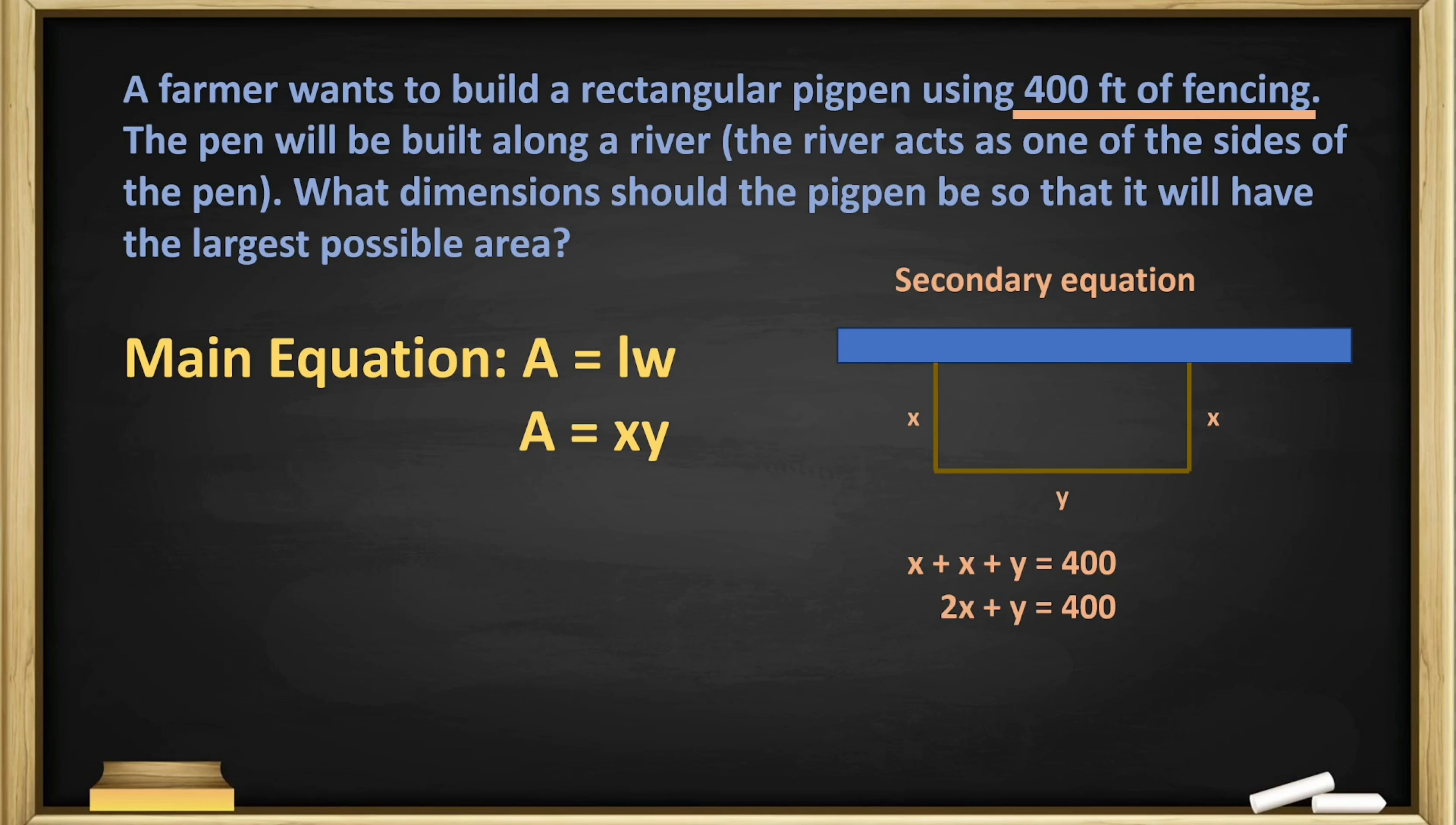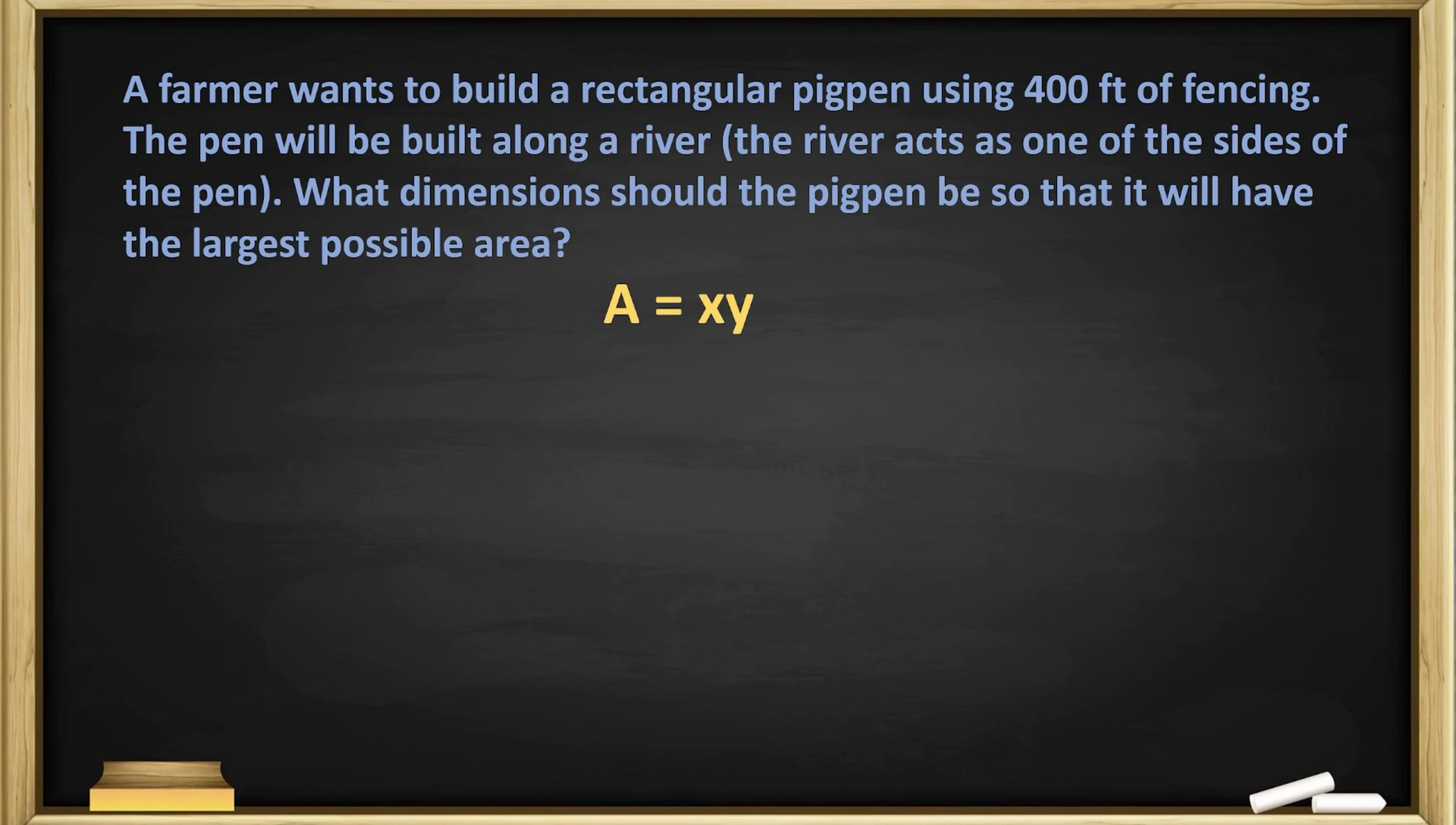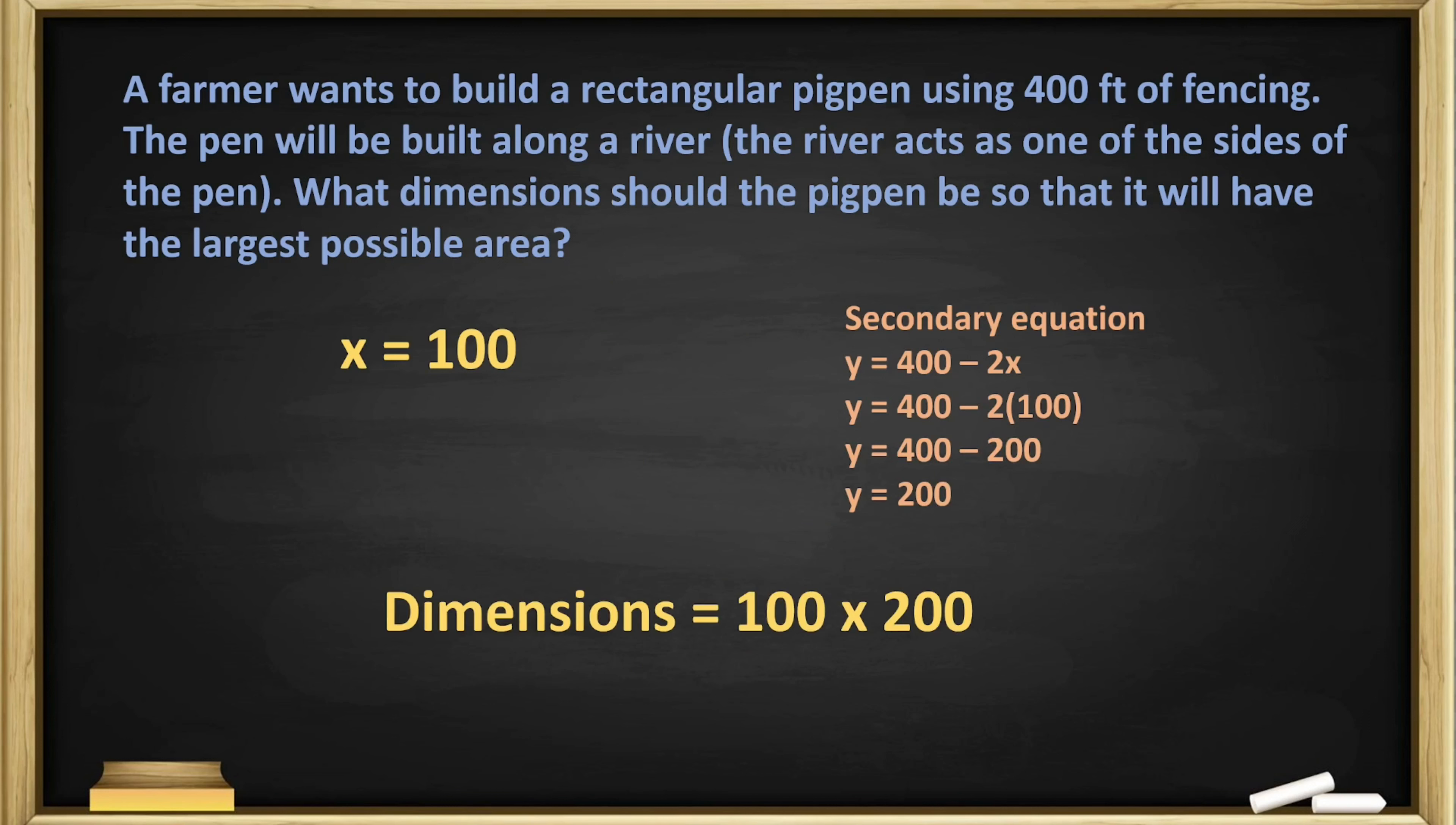Now we can simplify, isolate for the y, and substitute it into the y of our main equation, making our main equation look like this. We can distribute the x into the brackets to simplify, and now we can do calculus. We can derive it to get A', and then we set A' to zero. Solve for x, which is 100. Once we know x is 100, we can plug it back into the secondary equation and get y = 200. So now we know the dimensions will be 100 by 200.